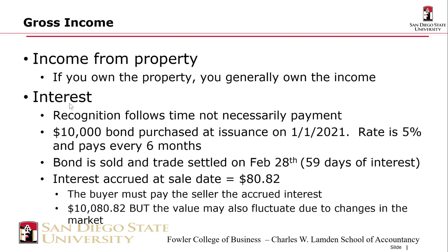Income can also come from property you own. Under the assignment of income doctrine, if you own the property, you generally own the income too. For interest, the recognition of interest follows time and not payment. For example, a $10,000 bond purchased at issuance on 1/1/21 at a 5% rate that pays interest every six months.